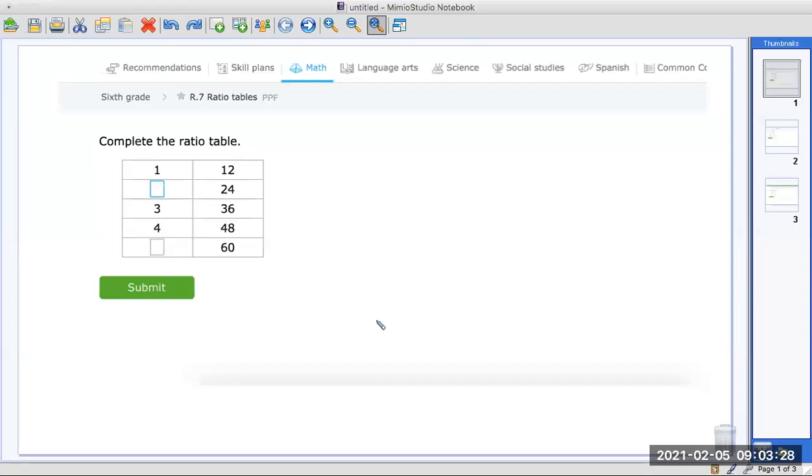Hello everybody. I wanted to show you a few examples for this iExcel assignment. It's under the sixth grade tab and it says R7 ratio tables.